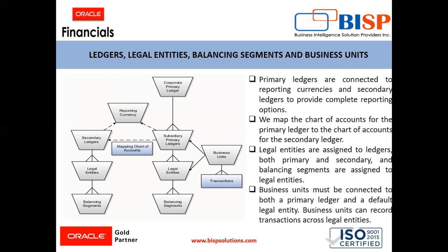Business units must be connected to a primary ledger and default legal entities. Under the business units, we record the transactions across the legal entities. So all these — the ledgers, legal entities, balancing segments and business units — are mapped with each other for recording the transactions.